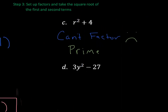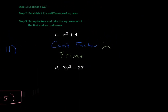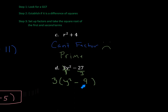Let's look at the last example. Step one: look for a GCF. Three and 27 do have a GCF — a common factor of three. So we write the three out front, which is like dividing each term by three. That gives us y squared, and 27 divided by three is nine, so we have 3(y² − 9). Now establish if it's a difference of squares: can I take the square root of y squared? Yes. Square root of 9 is three — yes. Is there a minus sign between them? Yes.